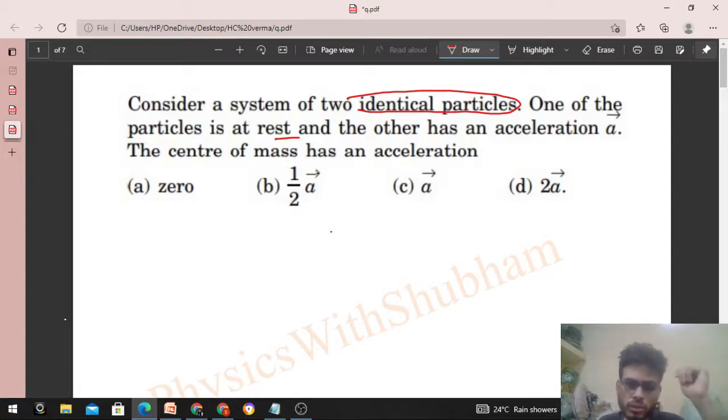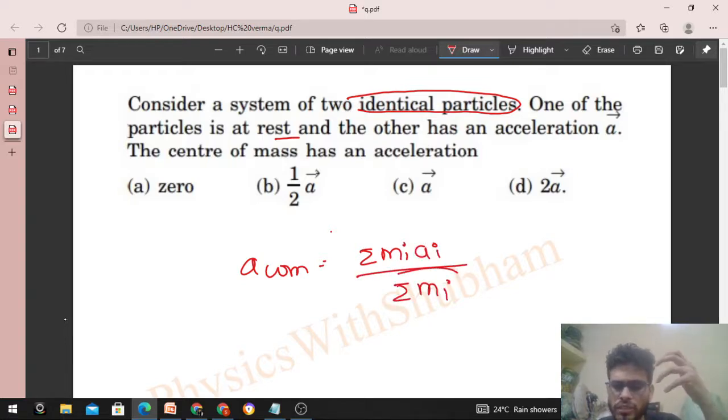Okay fine, so when we have a system of particles, how do we find acceleration of center of mass? That is summation of mi ai divided by summation of mi, and that is total mass of the system.